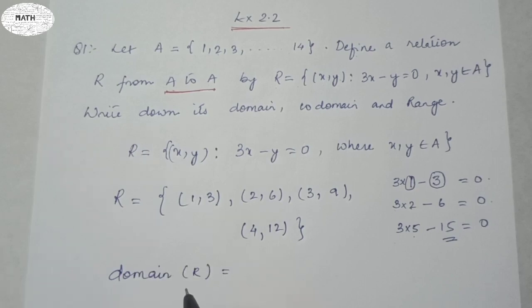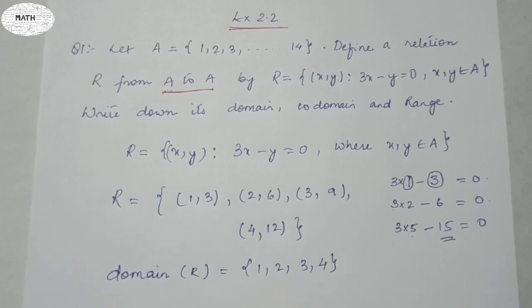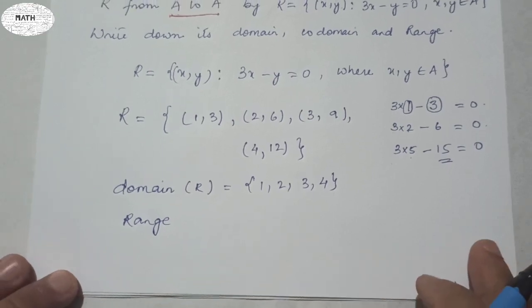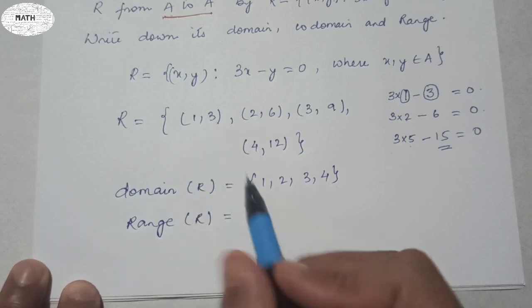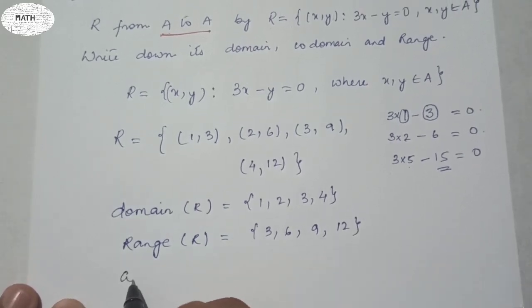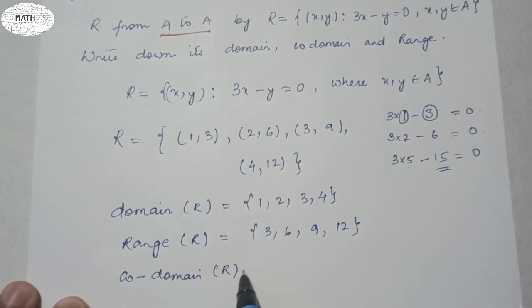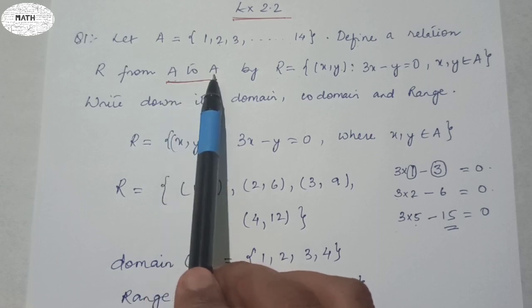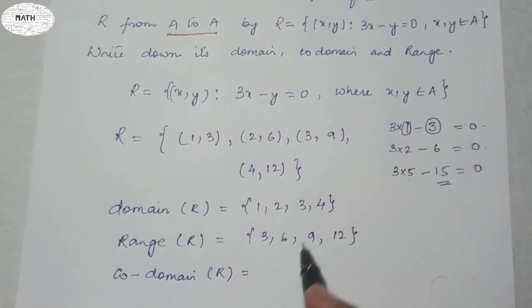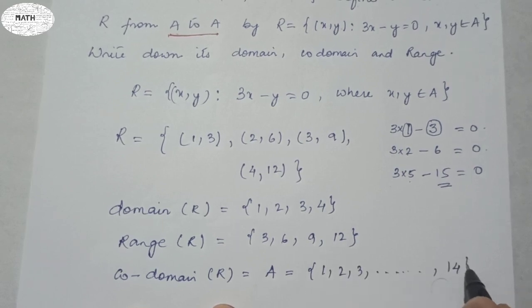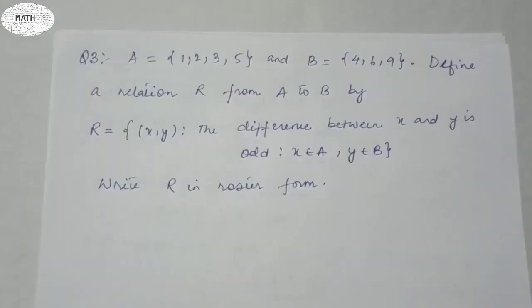Now finding domain, range, and co-domain: the domain of R is the set of first elements of the relation, which is {1, 2, 3, 4}. The range of R is the set of second elements, which is {3, 6, 9, 12}. The co-domain of R — since both sets are A, and the definition says co-domain is the second set — is A itself, which is {1, 2, 3, ..., 14}.